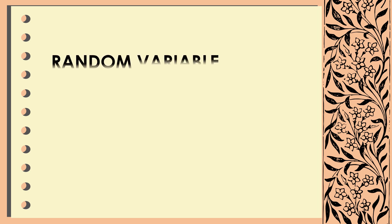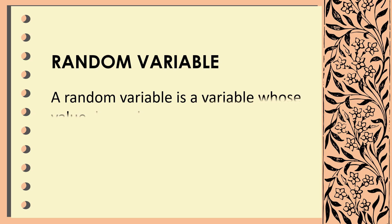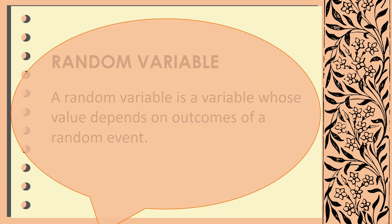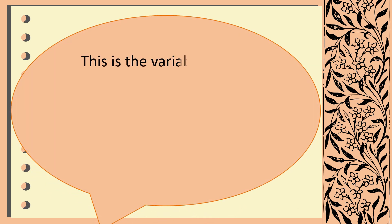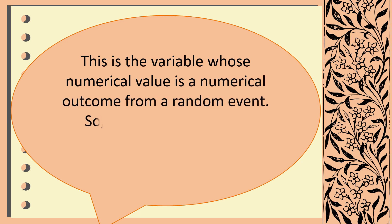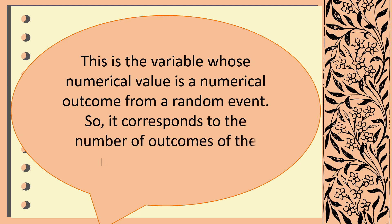First one, what is a random variable? A random variable is a variable whose value depends on outcomes of a random event. This is the variable whose numerical value is a numerical outcome from a random event. So it corresponds to the number of outcomes of the random experiment.